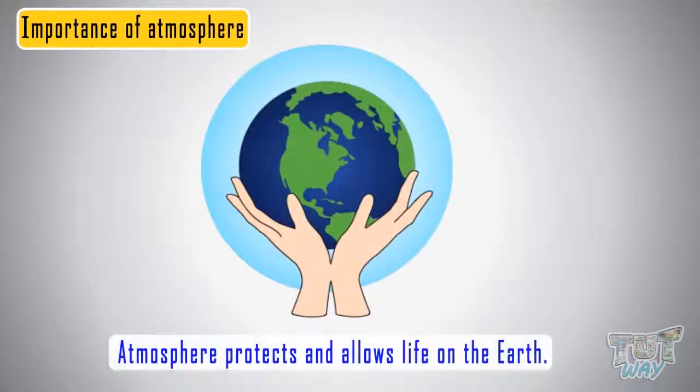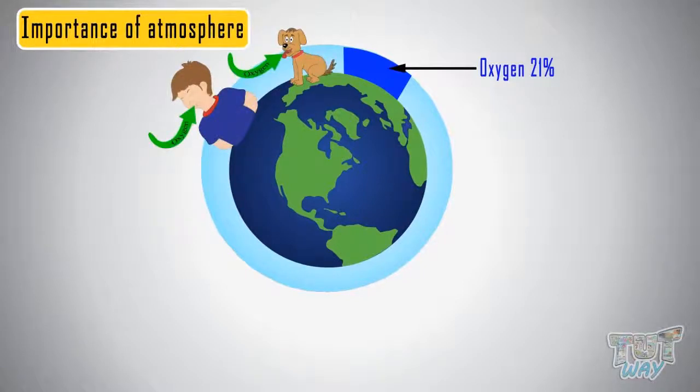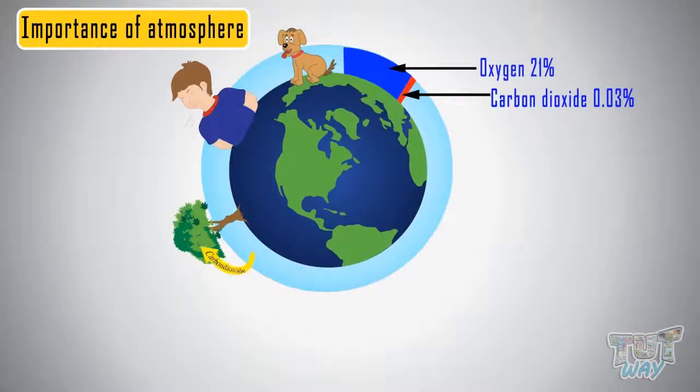The atmosphere protects the Earth and allows life on Earth. The atmosphere contains 21% of oxygen that living things need for respiration. The atmosphere contains 0.03% carbon dioxide which all plants need for respiration.